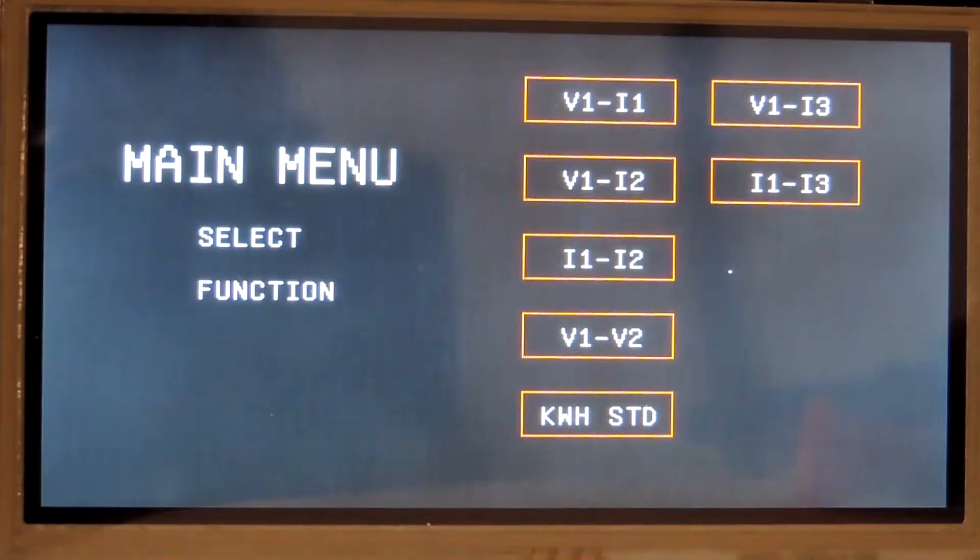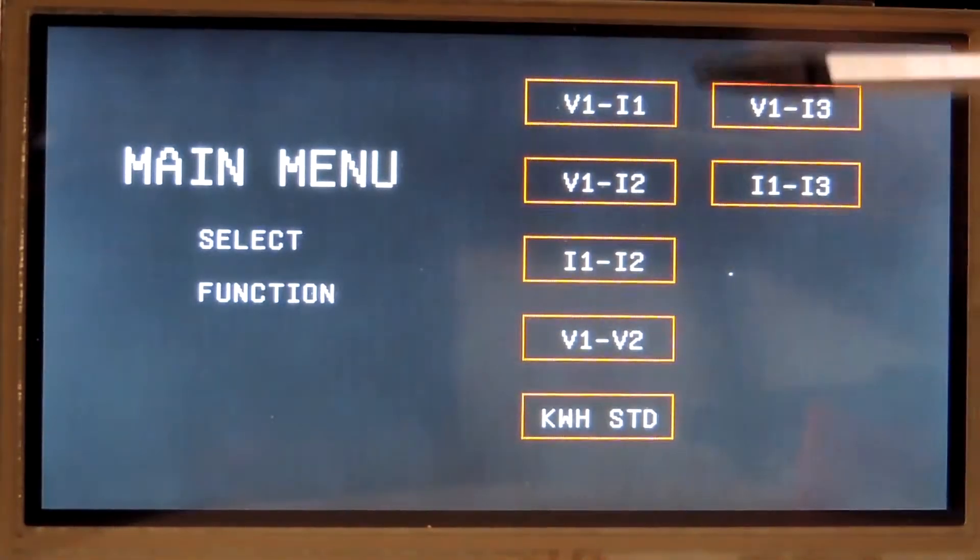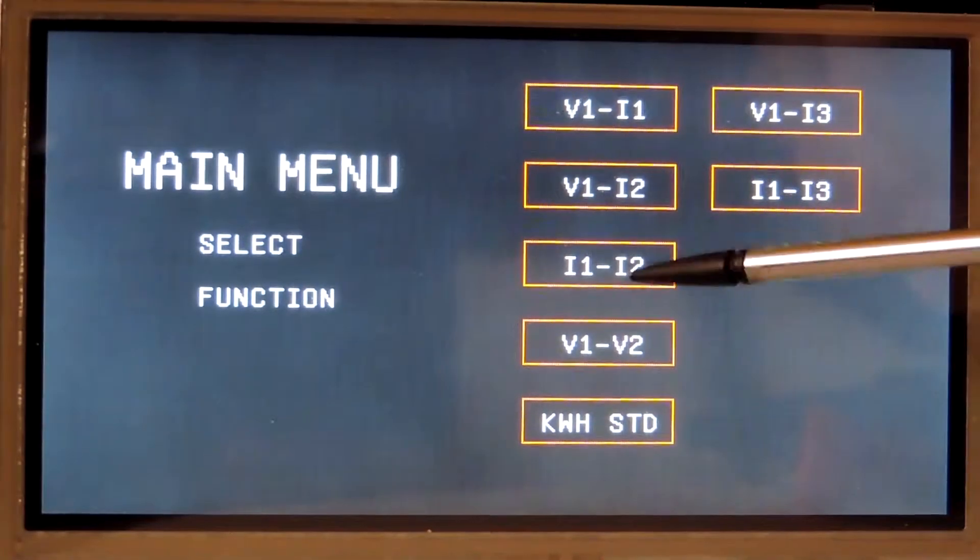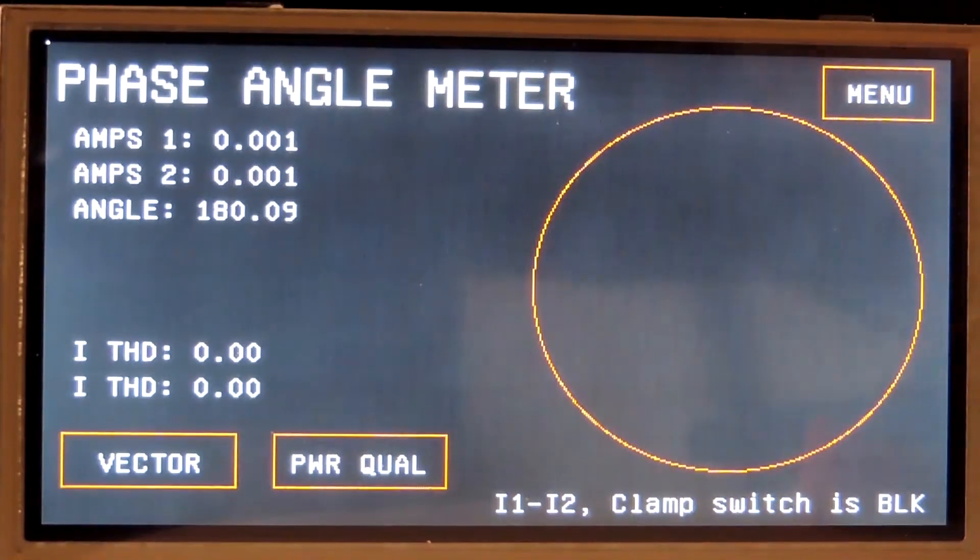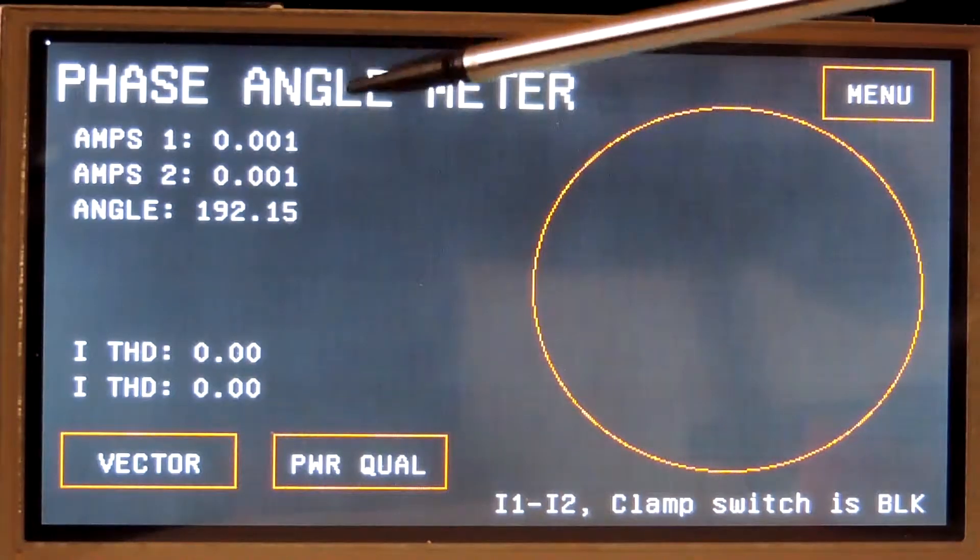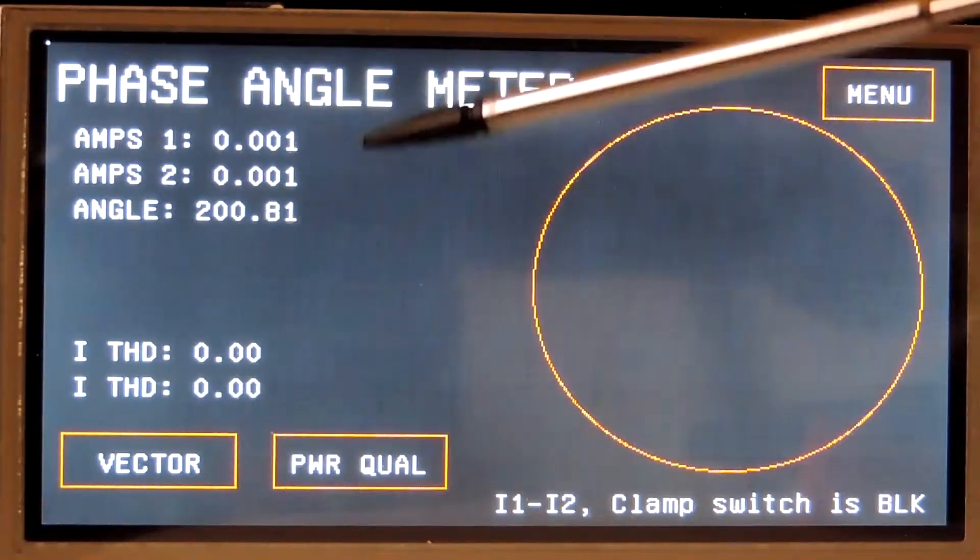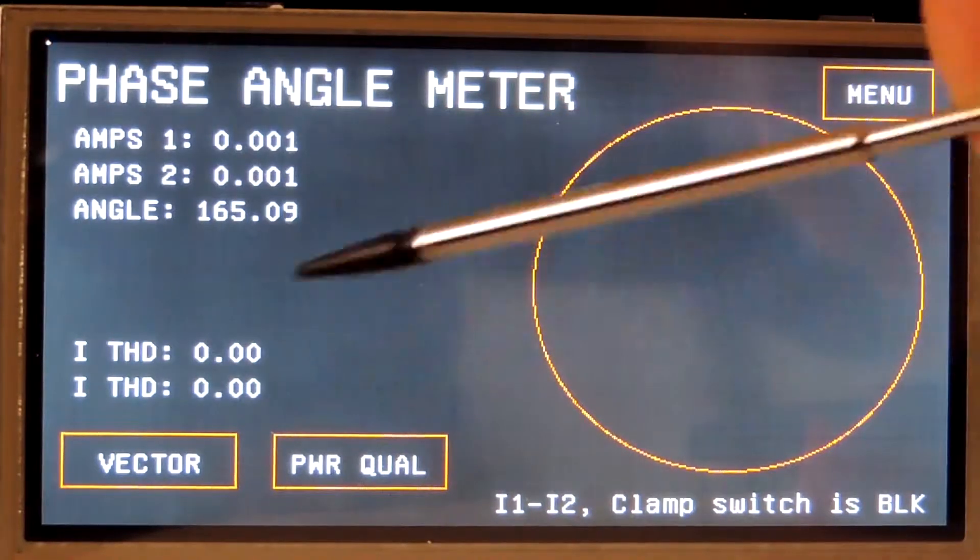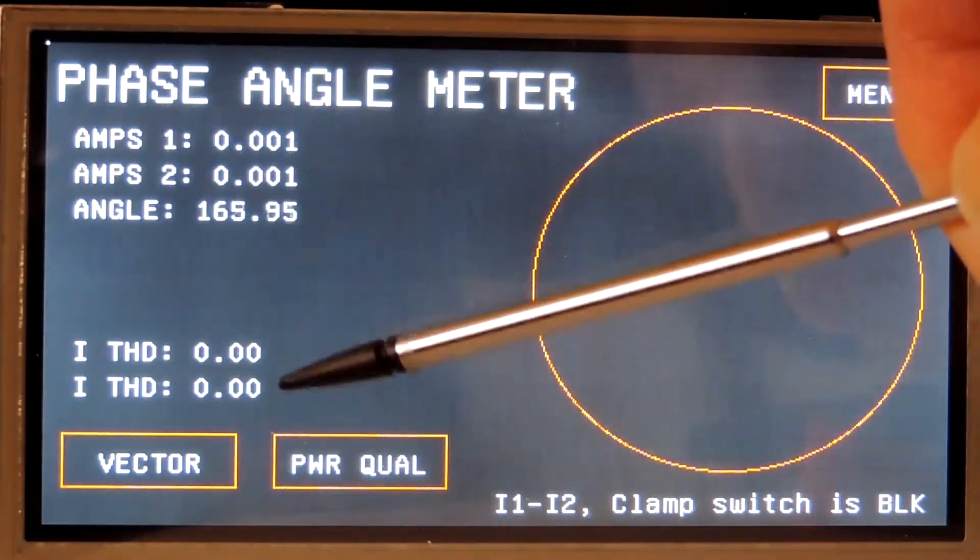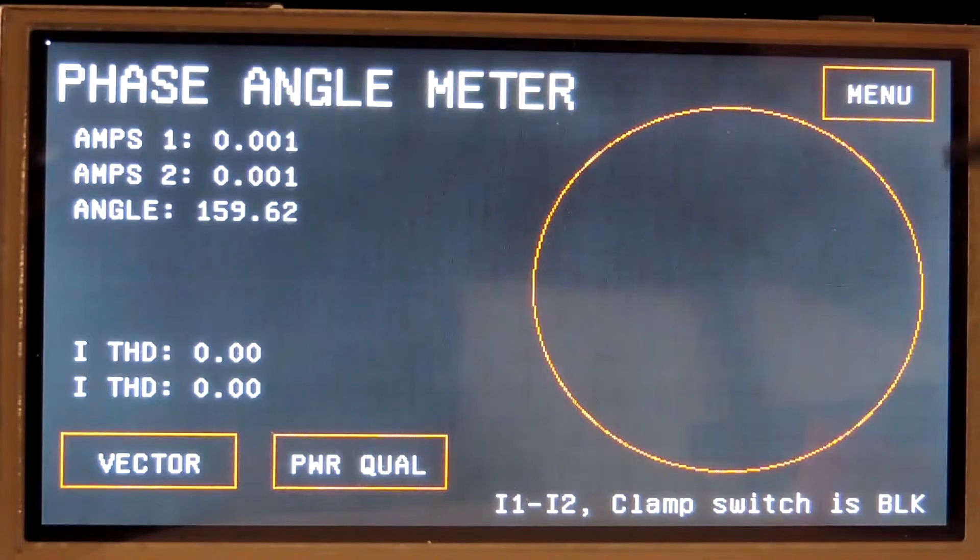As another feature, it will also measure a current versus a current. As you can see here, this is the hard wire binding post input versus the clamp on. It will measure those two currents and give you the angle between them and give you the harmonic distortion percent of both currents.